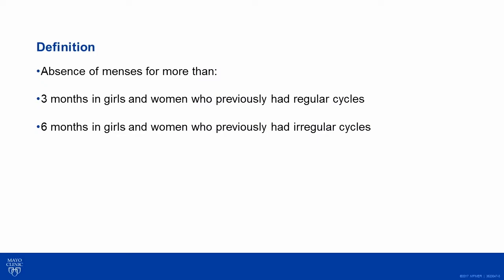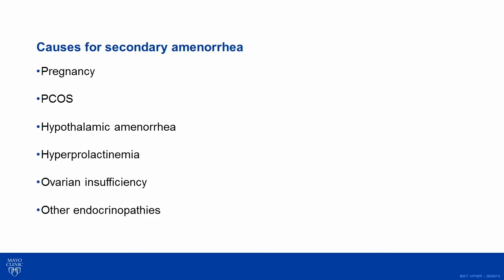As far as definition, secondary amenorrhea is defined as the absence of menses for more than three months in girls and women who had previously regular cycles, and six months or more in girls and women who had previously irregular cycles. There are multiple causes, and the most common one physiologically is pregnancy.